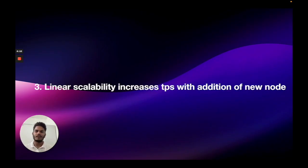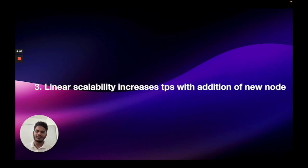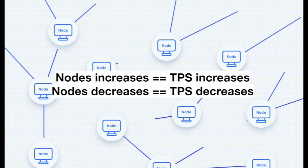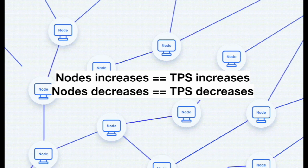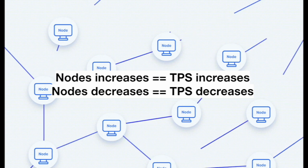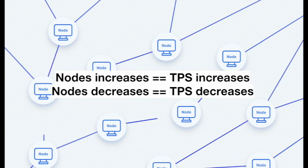The third difference is linear scalability — transactions per second increase with the addition of new nodes. As discussed earlier with auto-scaling, the blockchain adds nodes when there is high traffic and removes nodes from consensus when there is less traffic. When nodes are added during high traffic, the transactions per second of the blockchain increase. When nodes are removed during low traffic, the transactions per second decrease as well. This helps save resources in the blockchain, making it work efficiently.